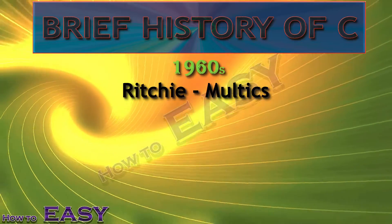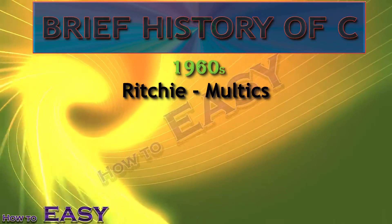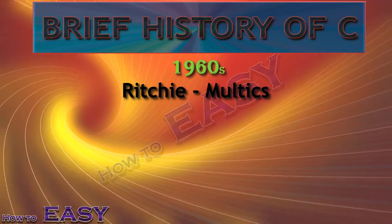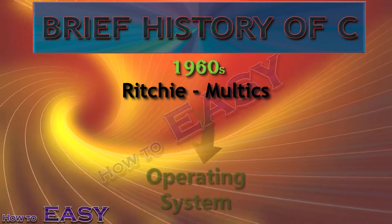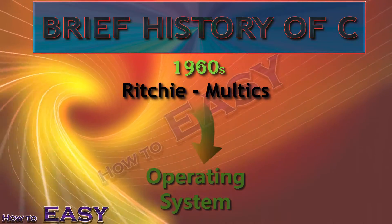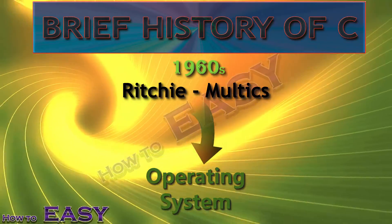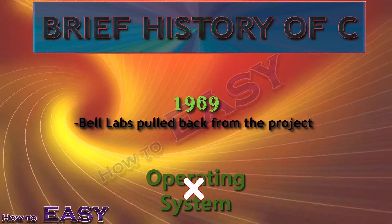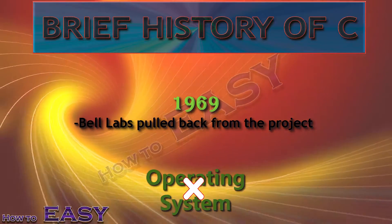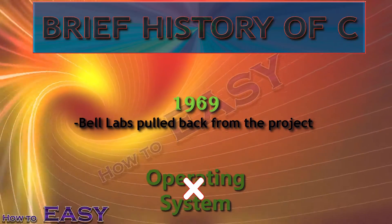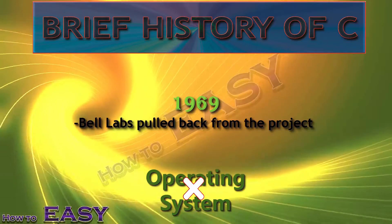In the 1960s, Ritchie worked with a few different representatives of Bell Labs AT&T on a project called Multics. The objective of the project was to build up an operating system for a substantial PC that could be utilized by a thousand clients. In 1969, AT&T pulled back from the project since it couldn't deliver an economically valuable system, so the workers of Bell Labs AT&T needed to look for another project, principally Dennis M. Ritchie and Ken Thompson.